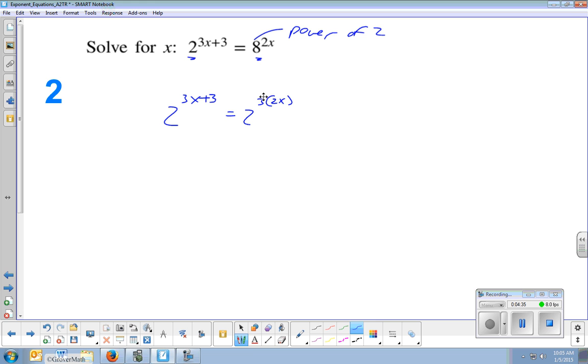And so changing 8 to 2 cubed, well, that 3 exponent is going to be multiplied by the exponent that was already there. And so that's what's going to happen, that when you change your base that has an existing exponent, it's going to be multiplied by the new exponent. So now I have a common base of 2, which I could just ignore. I set my exponents equal to each other. So that would be 3x plus 3 equals the product of my new exponent and old exponent is 6x. Subtract 3x on both sides. 3x equals 3. Divide and x equals 1.